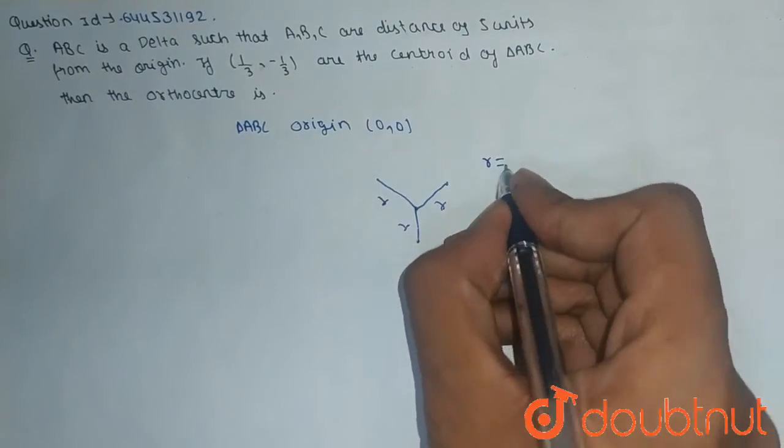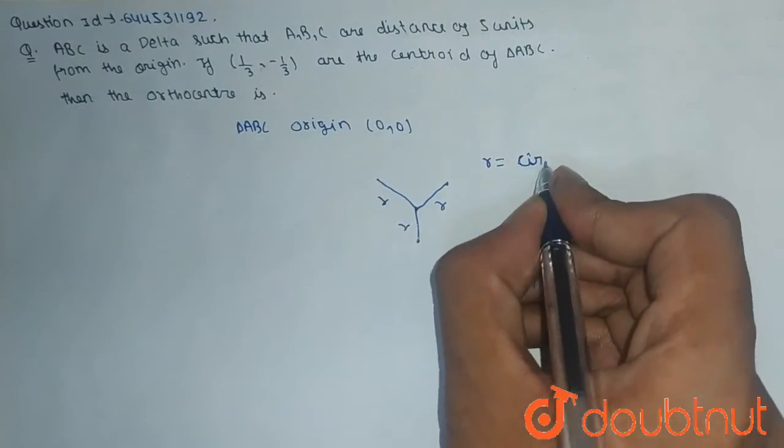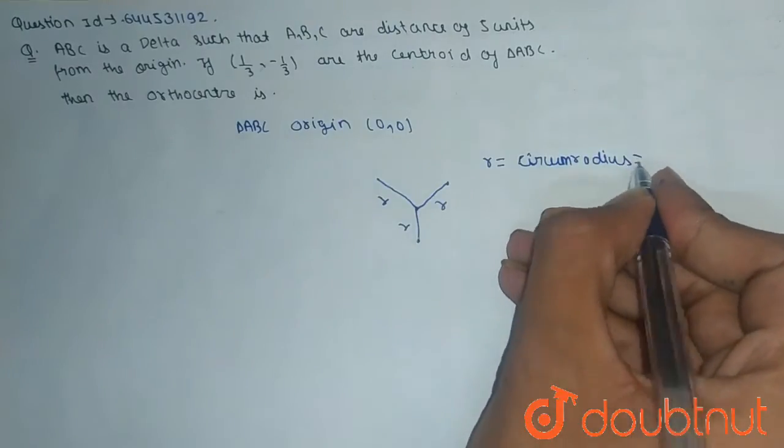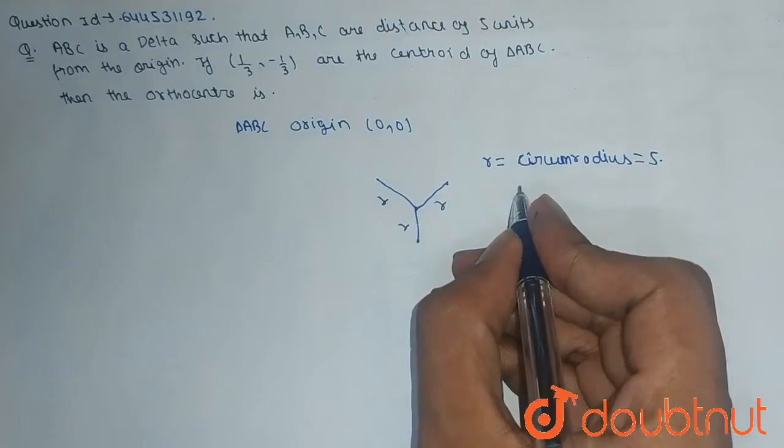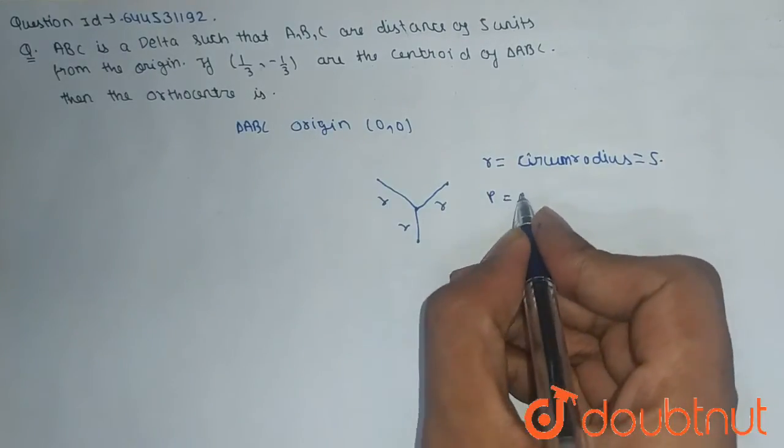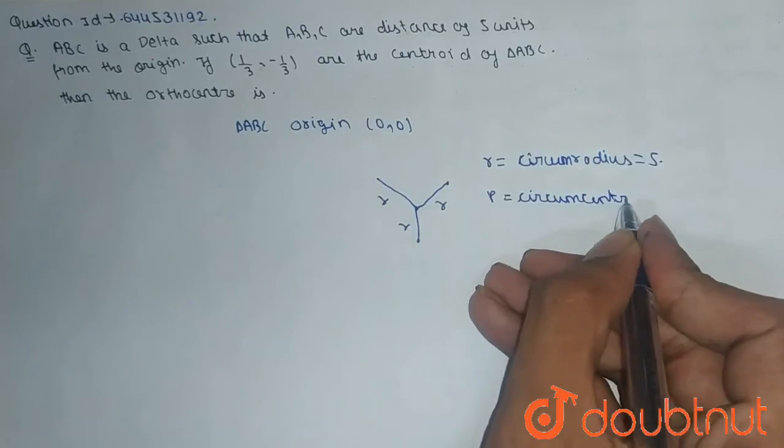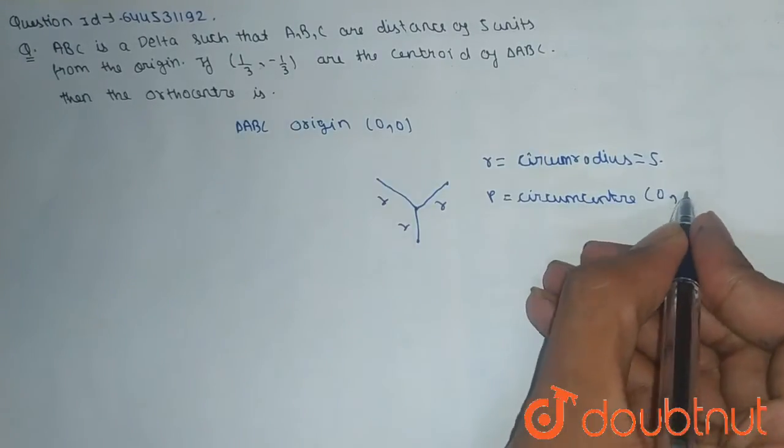So R is equal to circumradius, which is equal to 5. And consider P. P is equal to circumcenter, which is equal to (0, 0).